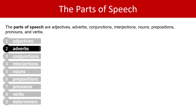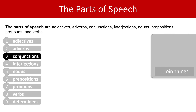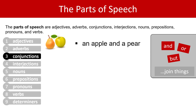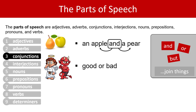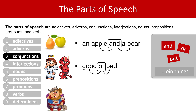Next, let's do conjunctions. Conjunctions join things. Here are three common conjunctions: and, or, and but. An apple and a pear — the conjunction 'and' joins 'apple' and 'pear'. Good or bad — the conjunction 'or' joins the words 'good' and 'bad'. Strong but stupid — the conjunction 'but' joins 'strong' and 'stupid'.